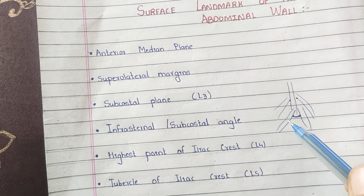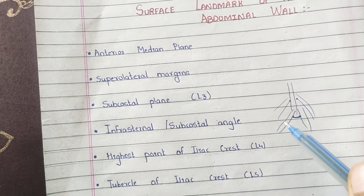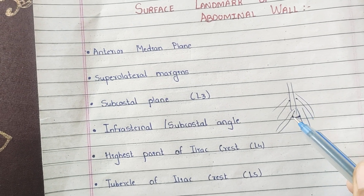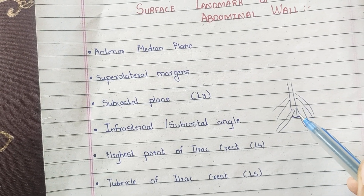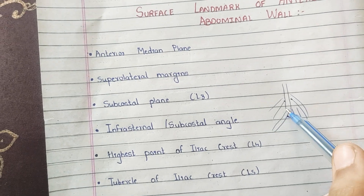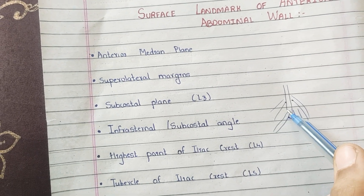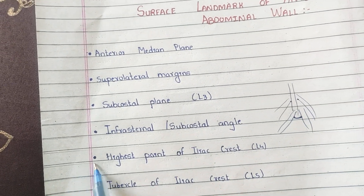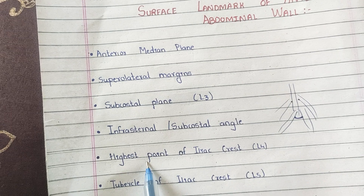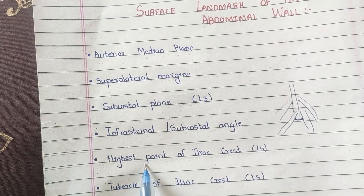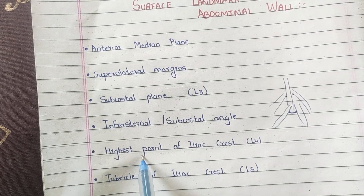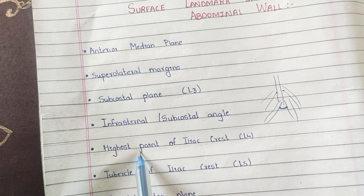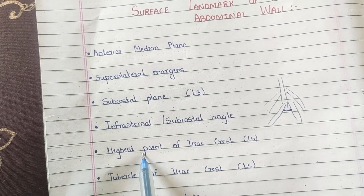The infrasternal subcostal angle: as we can see, the costal parts of the right and left ribs form the subcostal angle, at the apex of which lies the xiphoid process. The highest point of the iliac crest lies just behind the midpoint of the iliac crest and passes through the L4 vertebra.